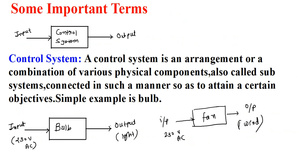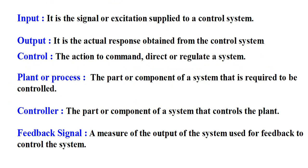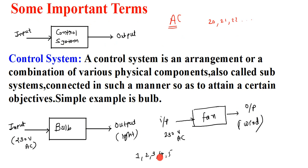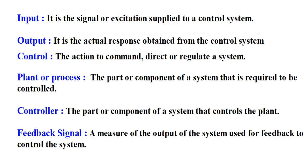Control: the action to command, direct, or regulate a system. For example, with a fan we adjust the regulator to positions 1, 2, 3, 4, or 5 depending on the room temperature. Similarly, for an air conditioner we set the temperature at 20, 21, or 22 degrees. If we set the fan on position four it rotates at a lower speed, and at position five it rotates faster. That is our control — the action to command, direct, or regulate a system.